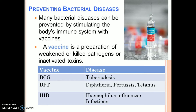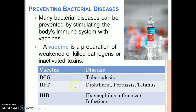How to prevent bacterial disease? Many bacterial diseases can be prevented by stimulating the body's immune system with vaccines. A vaccine is a preparation of weakened or killed pathogens or inactivated toxins. Examples include the BCG vaccine for tuberculosis, DPT for diphtheria, pertussis, and tetanus, and Hib for Haemophilus influenzae infections.